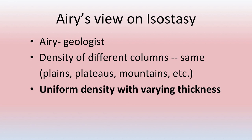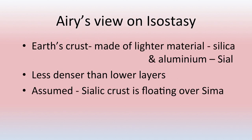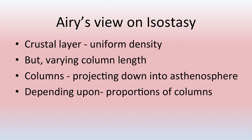Airy was a geologist who said the density of different columns on the earth surface — that is plains, plateaus, and mountains — is the same. So there is uniform density with varying thickness. According to Airy, earth's crust is made up of lighter material of silica and aluminium, known as SIAL, and this lesser dense layer is floating on the denser material, that is SIMA. The sialic crust has uniform density but there is varying depth of column length.